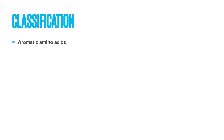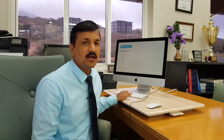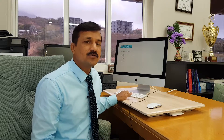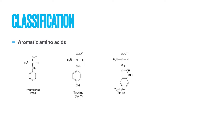Our next categorization is aromatic amino acids. The aromatic amino acids are phenylalanine, tyrosine, and tryptophan. As you can see, phenylalanine, tyrosine, and tryptophan all have an aromatic ring, which is why these are called aromatic amino acids.